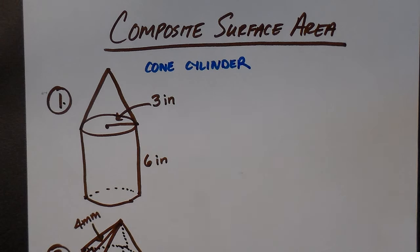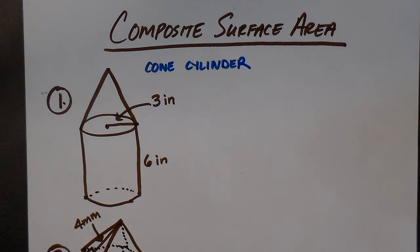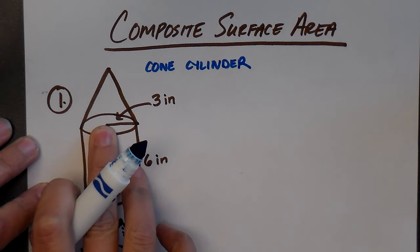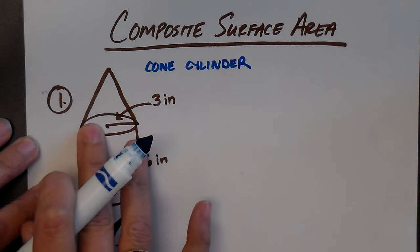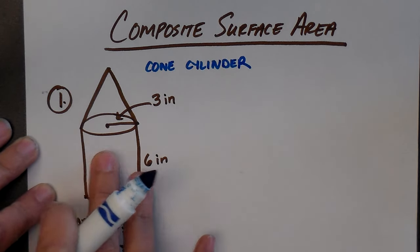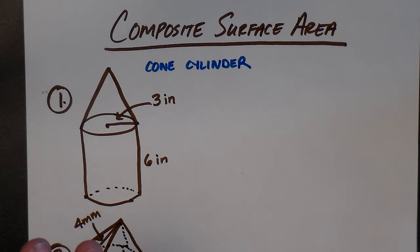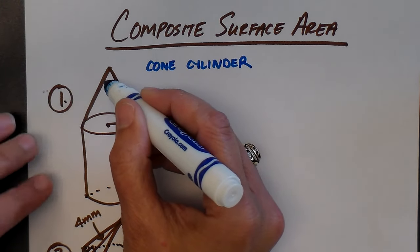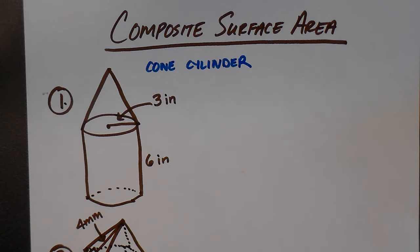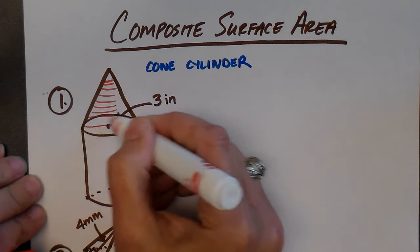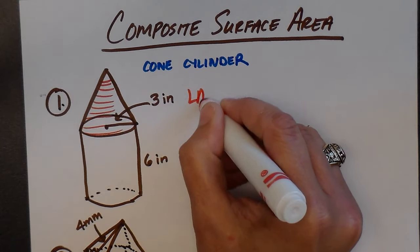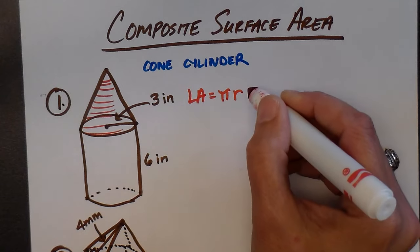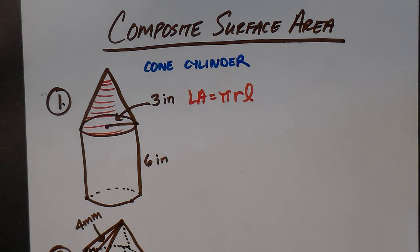I have to decide how much of the total surface area is showing. For the cone, if I were to wrap this up as a present with wrapping paper, would I have to wrap that circle on the base? No — that circle is not visible. The composite surface area is what is visible. So for the cone, we're going to do the lateral area, which is pi times radius times slant height.